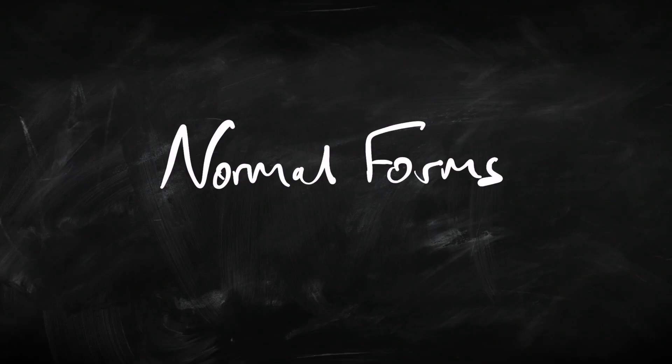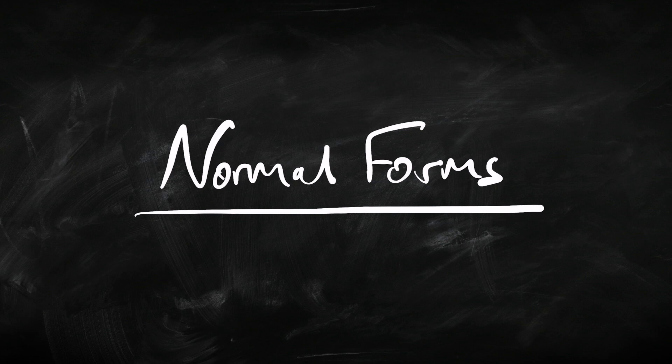A normal form is a set way for a sentence to look based on its syntax, based on its grammar, which allows us to glean some information about what that sentence means. We're going to look at three normal forms: negation normal form, disjunctive normal form, and conjunctive normal form. And we're going to see how we can transform any sentence of propositional logic into those normal forms.